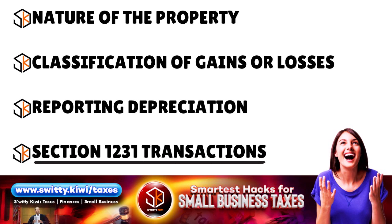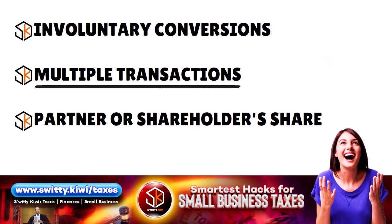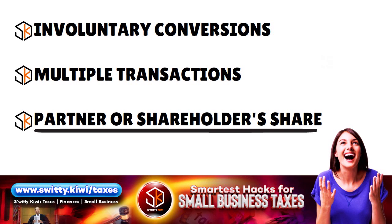Section 1231 transactions relate to the sale or exchange of certain business property including real estate and depreciable assets; you may be eligible for special tax treatment such as offsetting gains with losses. If your property was involuntarily converted — through theft, destruction, or condemnation — and you received insurance or other compensation, you must report that transaction on Form 4797. If you had multiple transactions, report each separately on separate lines. Partners in a partnership or shareholders in an S corporation generally do not file Form 4797 individually; instead, their share of gains or losses is reported on Schedule K-1.